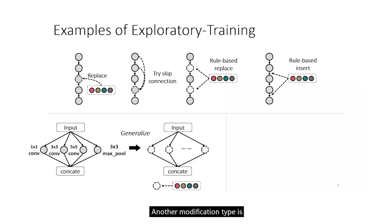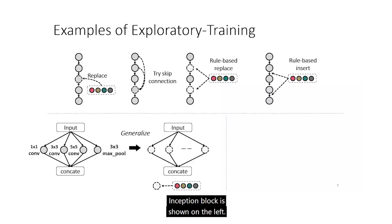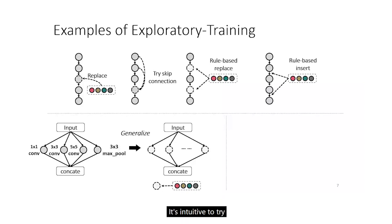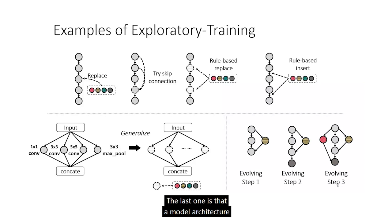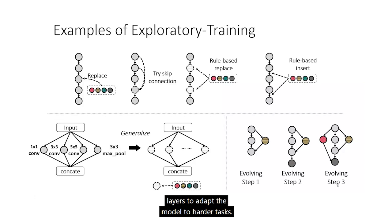Another modification type is generalizing a block structure. The Inception block shown on the left has four paths with one operator on each path. It is intuitive to try different model structures while keeping its main skeleton, for example changing the number of paths and changing the operator on each path. The last modification type is that a model architecture could gradually grow following some rules, for example adding layers to adapt to harder tasks, or gradually shrinking large models to adapt to easier tasks.